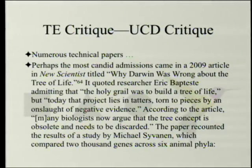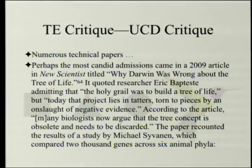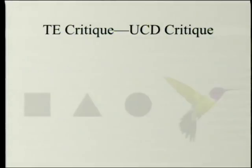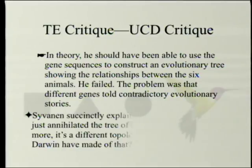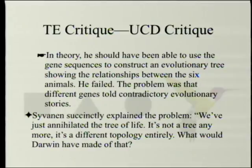Biochemist W. Ford Doolittle lamented that 'molecular phylogeneticists will have failed to find the true tree, not because their methods are inadequate or because they have chosen the wrong genes, but because the history of life cannot properly be represented as a tree.' The basic problem is that one gene leads to one version of the tree of life, but another gene leads to an entirely different tree. A 2009 article in New Scientist titled 'Why Darwin Was Wrong About the Tree of Life' quoted researcher Eric Bapteste admitting that 'the Holy Grail was to build a tree of life, but today that project lies in tatters, torn to pieces by an onslaught of negative evidence.' Michael Syvanen compared 2,000 genes across six animal phyla and failed — different genes told contradictory evolutionary stories. He explained: 'We've just annihilated the tree of life. It's not a tree anymore. It's a different topology entirely.'